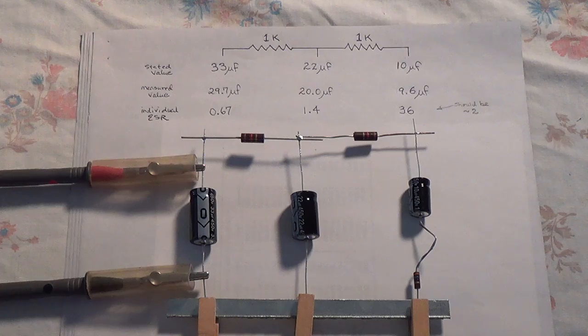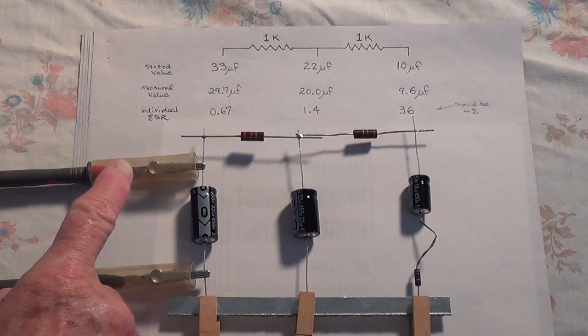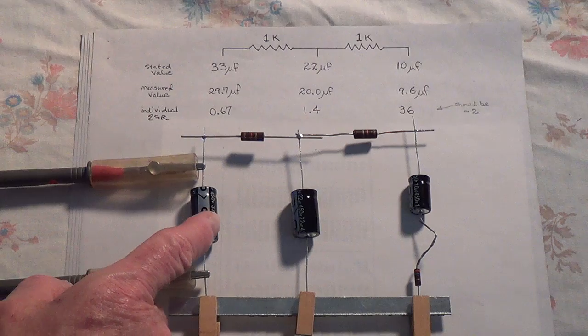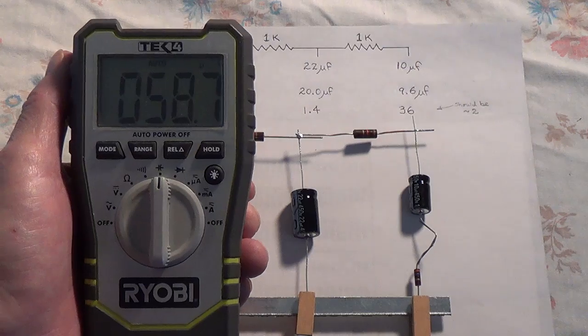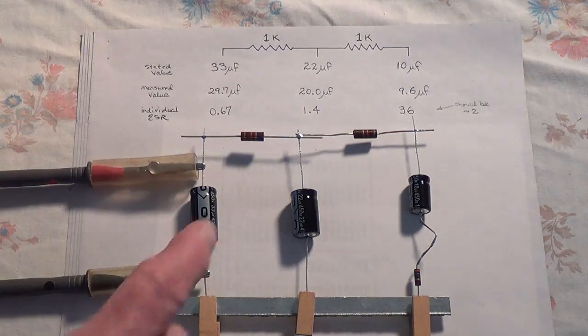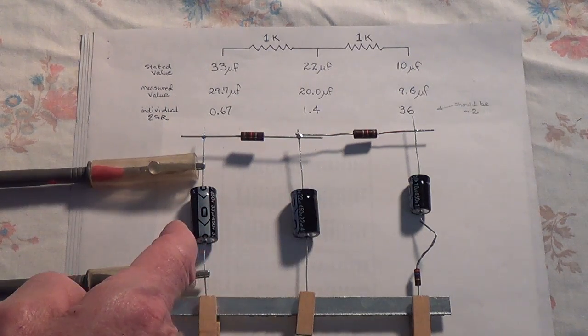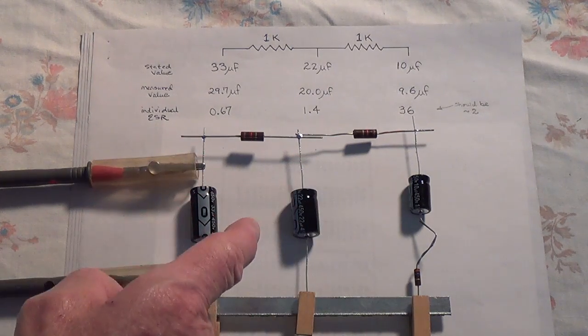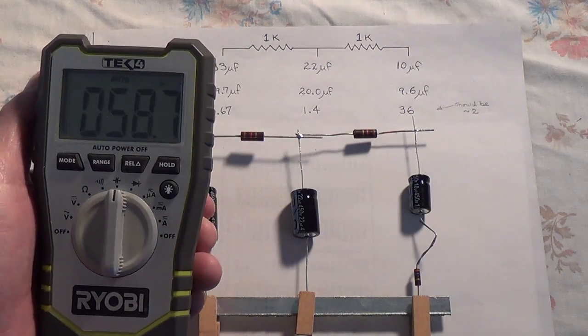Now here is where a major source of confusion arises. When people try to measure the capacitance of say this 33 microfarad capacitor in their power supply rail of a tube amp, they'll get a value much higher, 58.7 microfarads. Now this value reflects the total capacitance of all three capacitors which, even though they aren't strictly wired in parallel, behave like they are when you try to take readings with a capacitance meter.